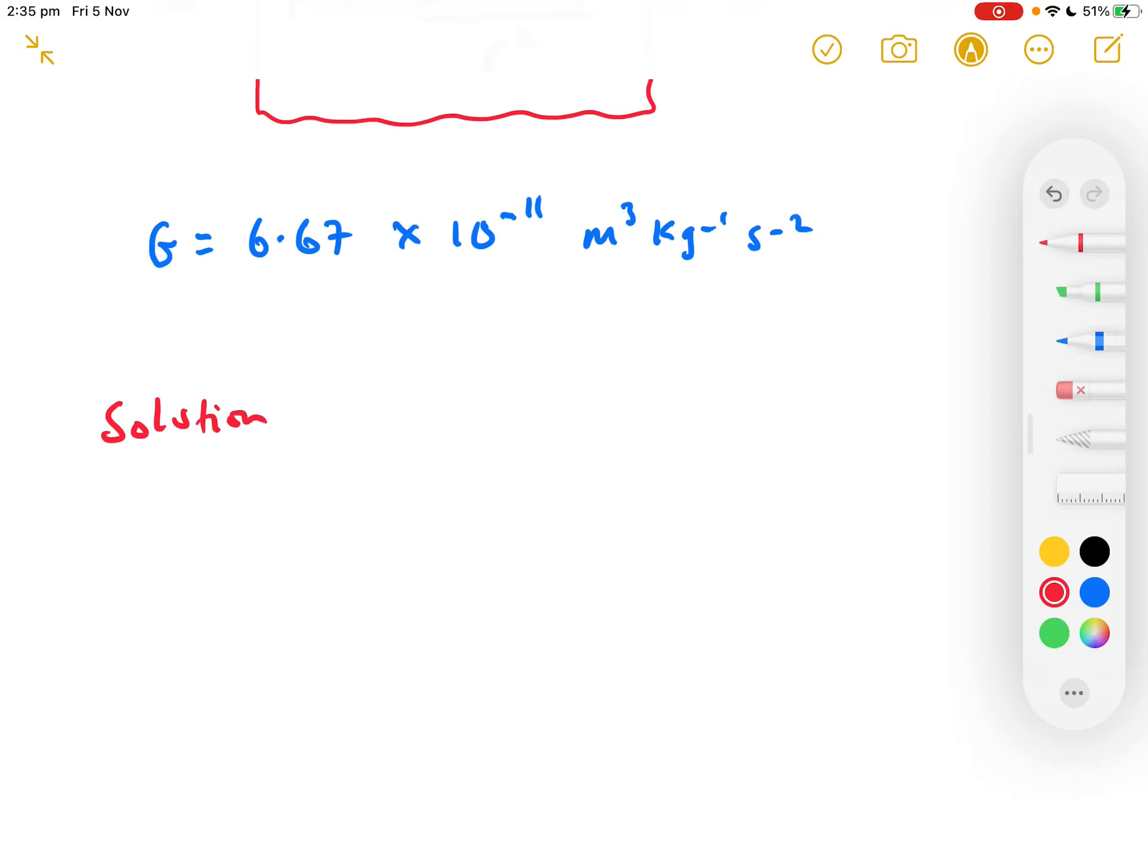So, to do so, we get the solution. And we list all of our variables. Well, F is the unknown, obviously. M1, 0.3 kilograms.